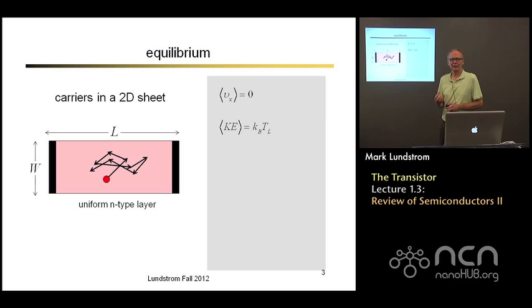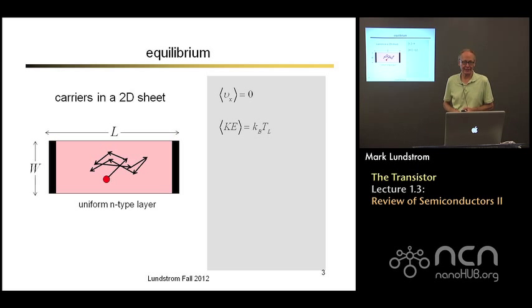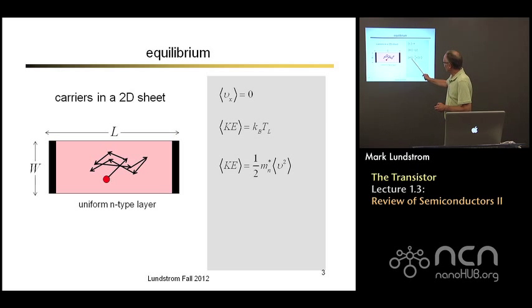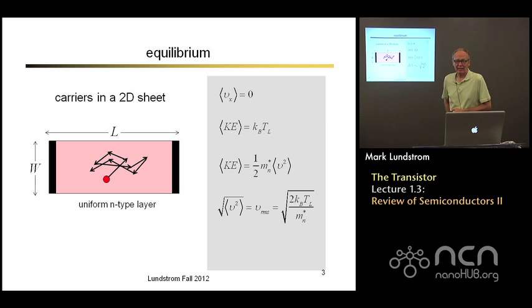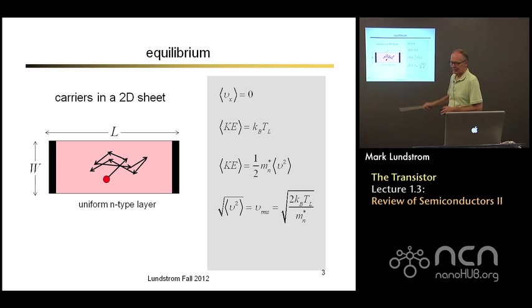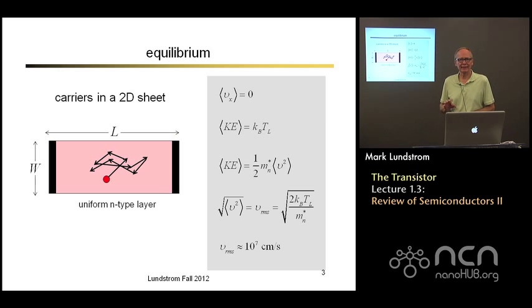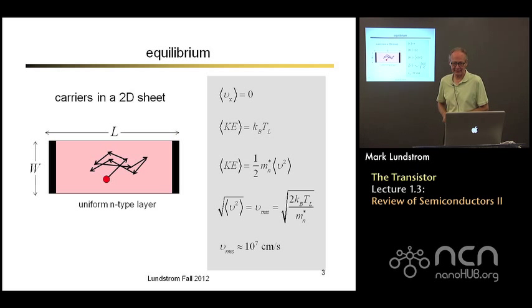These electrons have some kinetic energy. If they were moving in 3D, their kinetic energy would be (3/2)kT, where k is Boltzmann's constant. Since they're only moving in 2D, their energy is just kT. We can relate their kinetic energy to their effective mass: kinetic energy equals (1/2) m* times average velocity squared. That lets us equate kinetic energy to thermal energy and get a simple expression for the root mean square thermal velocity. Plugging in typical numbers, this is about 10^7 centimeters per second — so even in equilibrium with no current flow, electrons are zipping around at a pretty high velocity. They're just going nowhere.